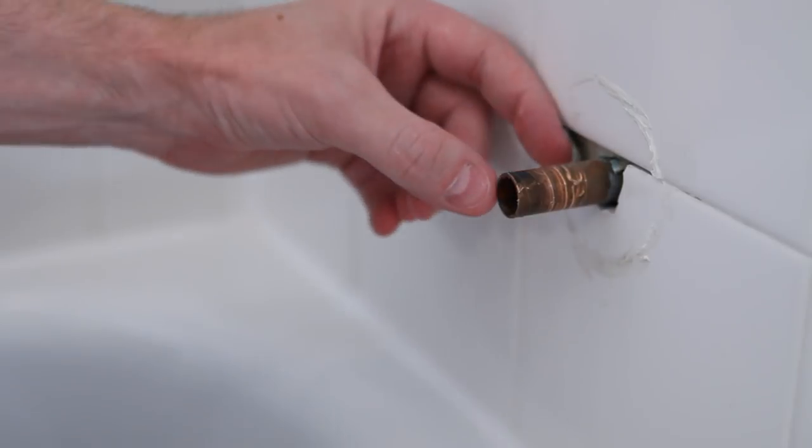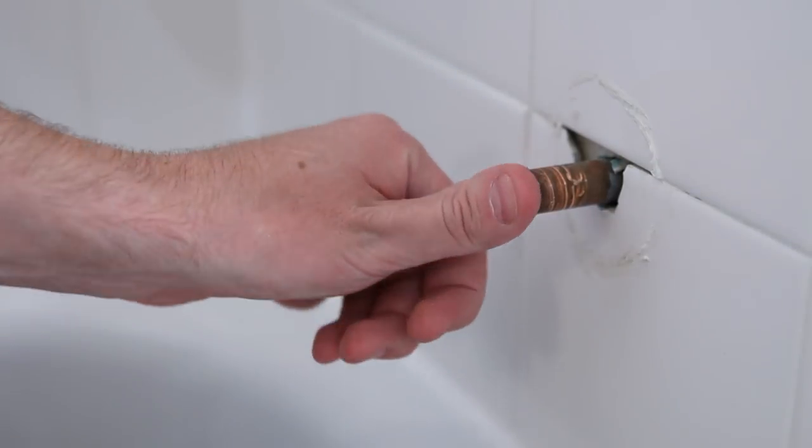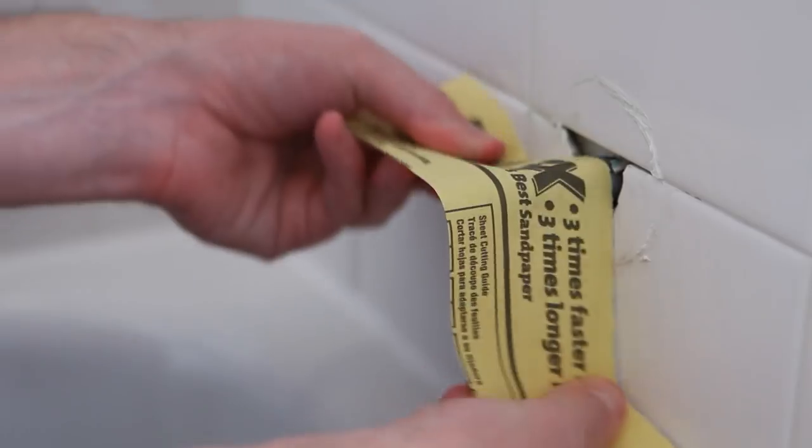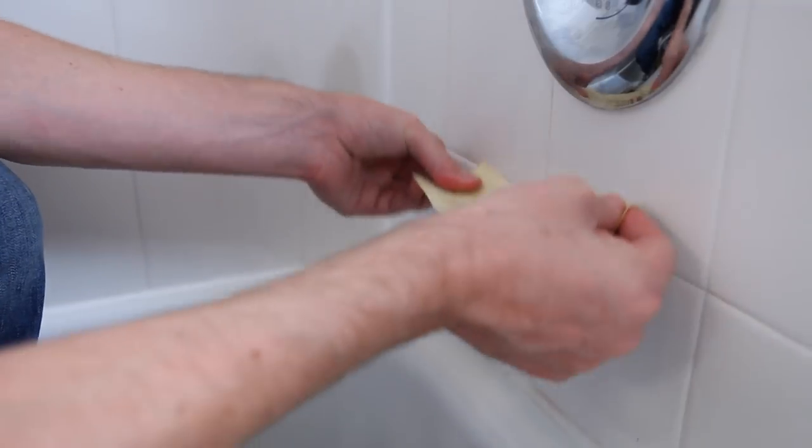Now, measure the stub out nipple length from the wall surface to the end of the pipe. It must be between 2 and 3 inches. The end of the stub out nipple should be even. You can use sandpaper to remove burrs and sharp edges from the end of the tubing and to polish the tube surface to a smooth bright copper color.